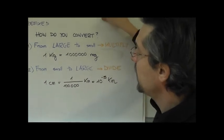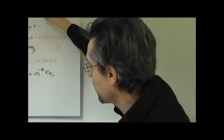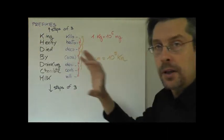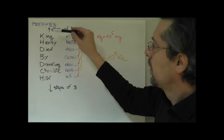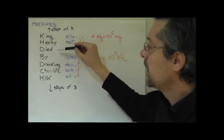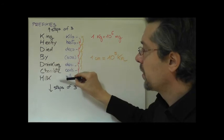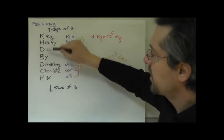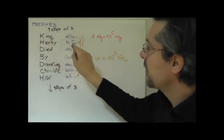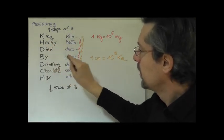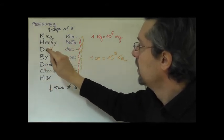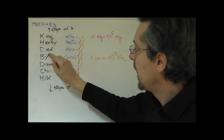To make things more easy, there's a way to remember the sequence of the middle part of our table. And it goes as following: King Henry died by drinking chocolate milk. Now if you see the first letters of the sentence, you will see they will correspond to the first letter of our prefixes.